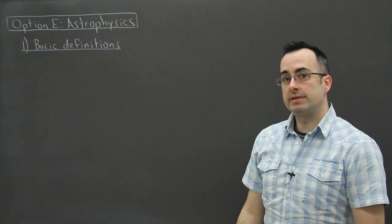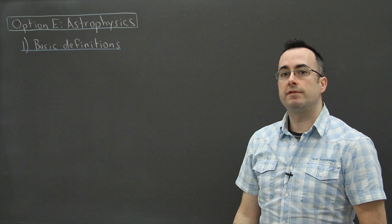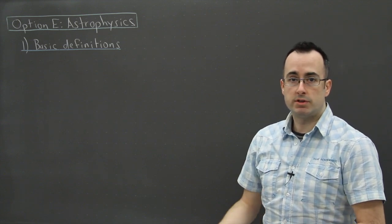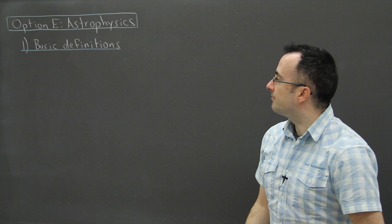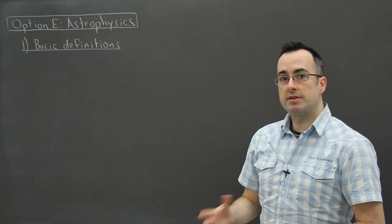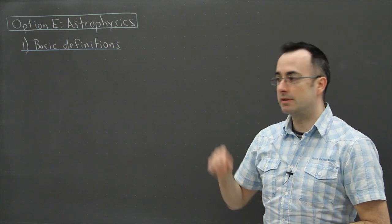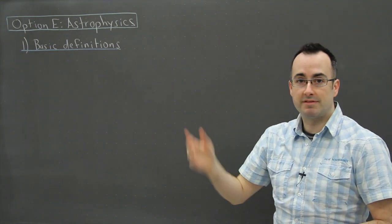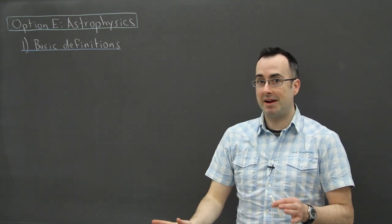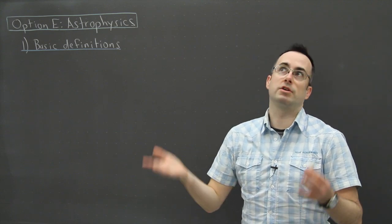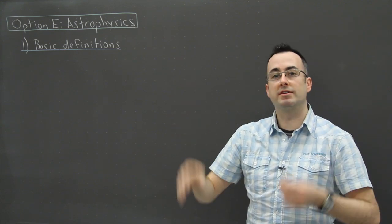Option E, astrophysics, is an option that's both for standard level and higher level students. I'm gonna start off by going over some basic definitions and I got to tell you this is actually my favorite option, actually it's my favorite topic within physics. So keep in mind I'm very biased. I think this is the coolest thing because everyone can appreciate just looking up at the sky and wondering what's going on up there.